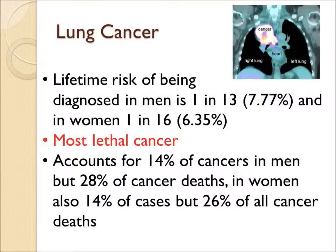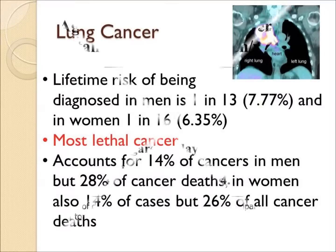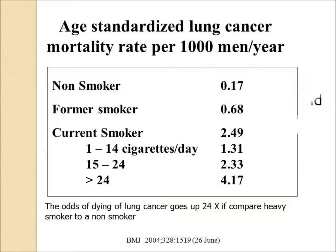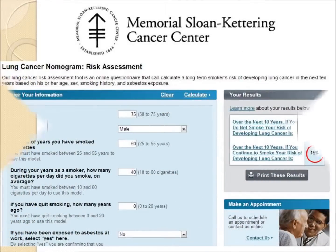The odds of getting this cancer is relatively low, but it is the most lethal cancer and accounts for more than a fourth of cancer deaths. The odds of the cancer are heavily related to smoking — a non-smoker's risk is quite small, a former smoker's is much better than a current smoker's, and heavy smokers have the highest risk. There are calculators on the website that will calculate the actual odds of developing lung cancer if you are a smoker.